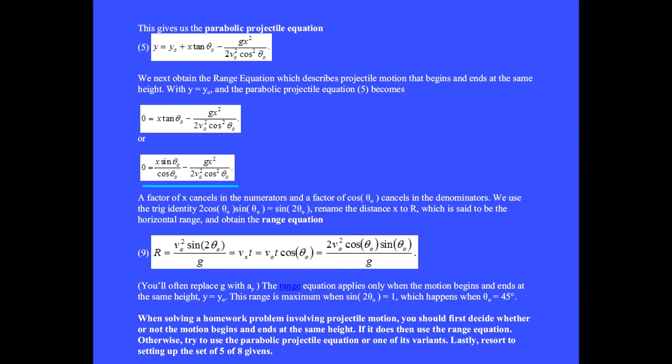A factor of x cancels in the numerators, and a factor of cosine θ cancels in the denominators. We move the remaining cosine from the denominator of this term to the numerator of this term. We use the trig identity, 2 cosine θ sine θ equals sine 2θ. Rename the distance x to r, which is said to be the horizontal range, and obtain the range equation.